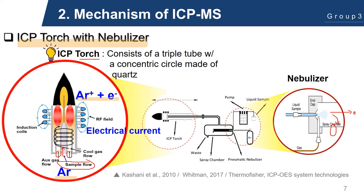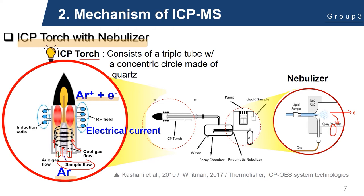At the end of this torch is an induction coil supplied with radiofrequency electric current. A high voltage discharge, also known as a Tesla spark, is applied to the flowing argon gas for a short time to introduce free electrons into the gas stream. As electrons travel back and forth due to the high alternating magnetic field from the induction coil, they ultimately collide with the argon gas, causing ionization into Ar⁺ ions. As the small sample aerosol droplets are pumped into the high temperature argon plasma, they are dried, decomposed, atomized, and finally ionized, producing a rich source of positively charged ions.